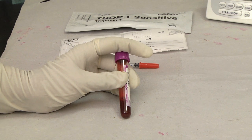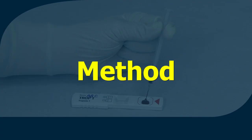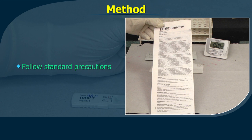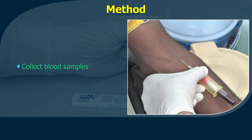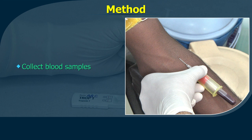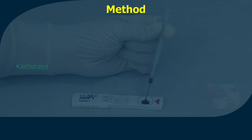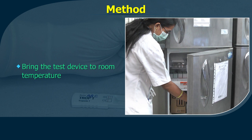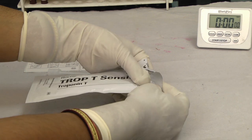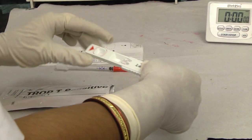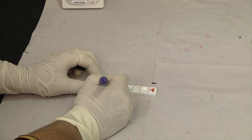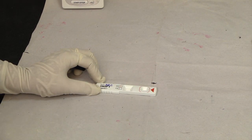EDTA venous whole blood sample method. Follow all standard precautions while performing the test. Collect blood samples as described in the section on phlebotomy. Remove the test device and sample from the refrigerator and bring them to room temperature prior to testing. Remove the test device from the sealed pouch immediately before use and label the device with the sample identification number.